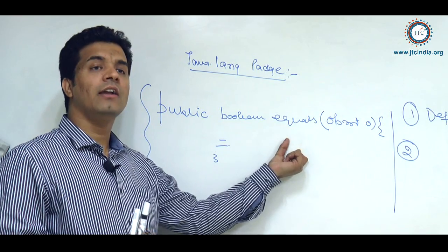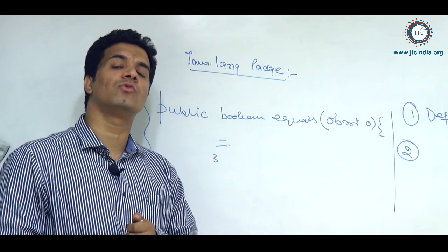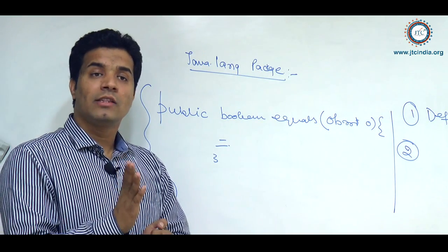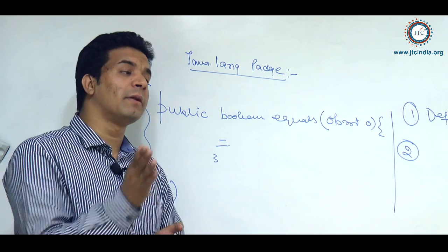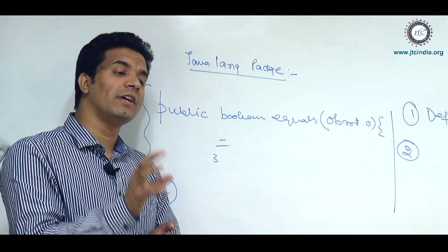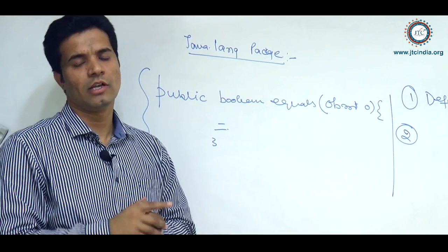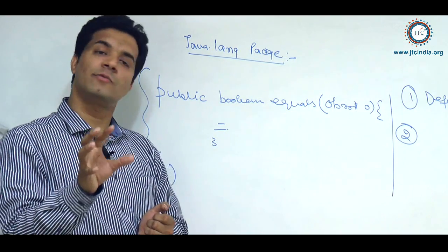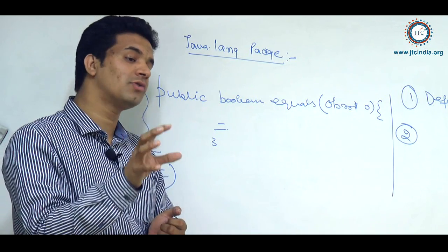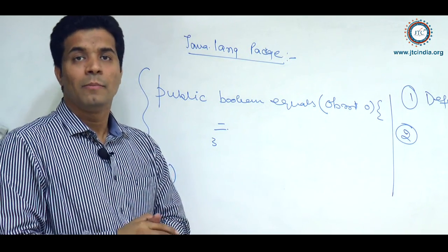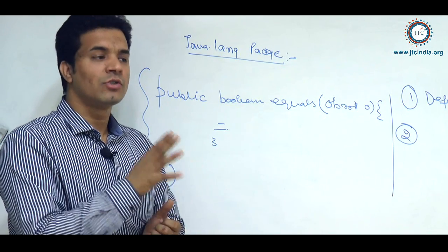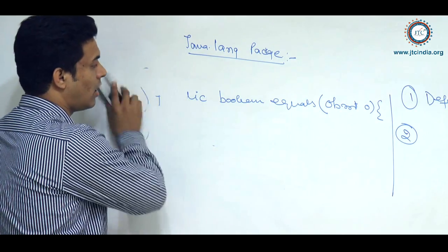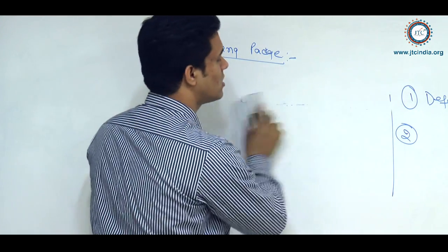If anyone says that equals method is just there to check the content of two objects, that is wrong. Equals method depends on the implementation — how it has been written. In the case of the String class, equals has been overridden to compare two string literals, but not in all cases. I will show you examples of how equals method works in both cases.